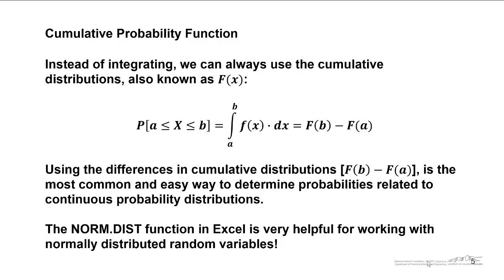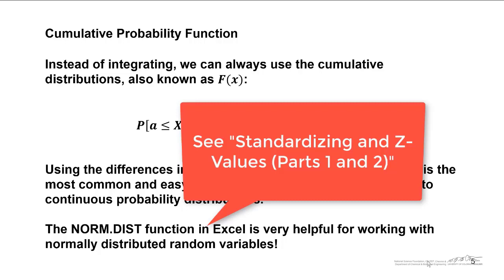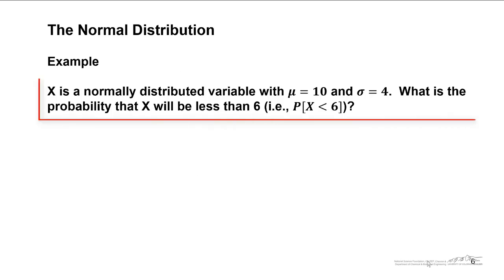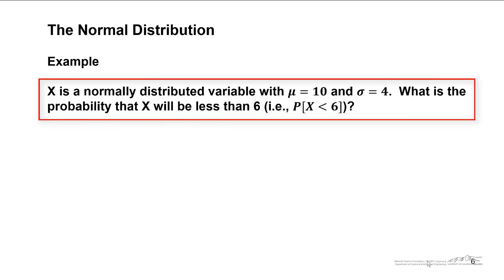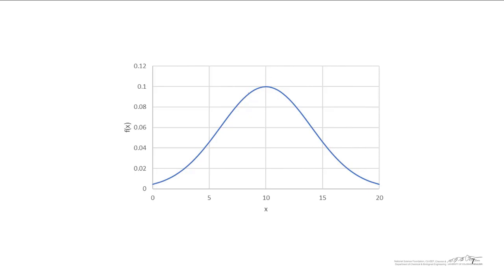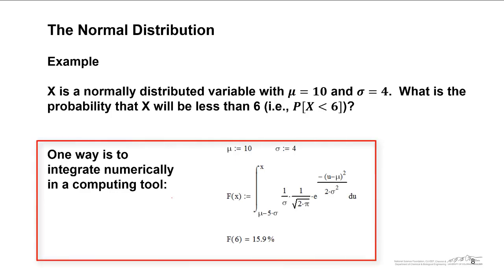If you do not have access to Excel on a day-to-day basis, you are going to have to standardize everything and convert it to the standard normal distribution and use tables in the back of your book. Let us go through an example. x is a normally distributed variable with mean equals 10 and standard deviation equals 4. What is the probability that x will be less than 6? We are interested in determining the probability that x lies underneath the curve less than 6 — theoretically integrating from negative infinity up to 6. One way to do this is to numerically integrate using a computing tool such as MathCAD or Mathematica, and we get about a 16% chance.